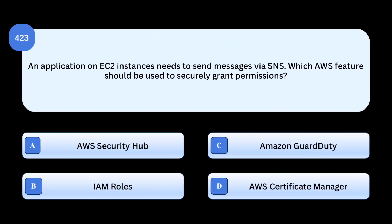An application on EC2 instances needs to send messages via SNS. Which AWS feature should be used to securely grant permissions?